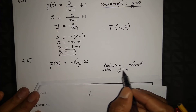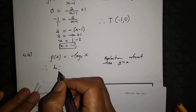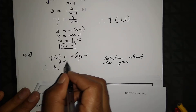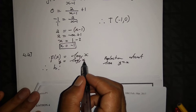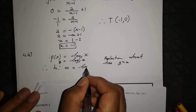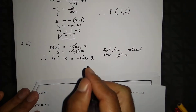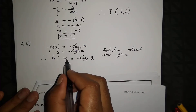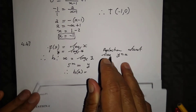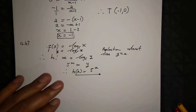Since f of x is y equal to log base 5 of x, we swap x and y to get x equal to log base 5 of y. Applying the log definition, 5 to the power x equals y. Therefore h of x is equal to 5 to the power x, which is the reflection of the logarithmic function.